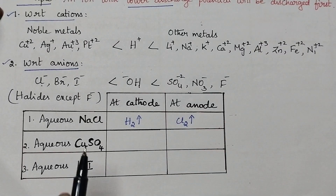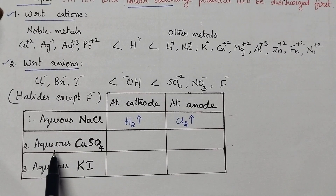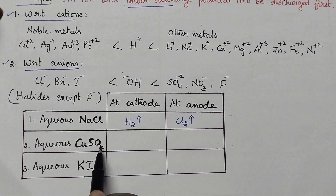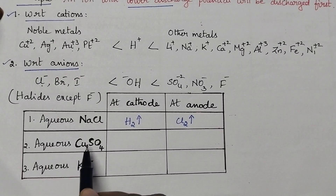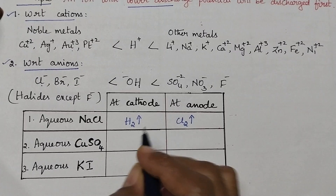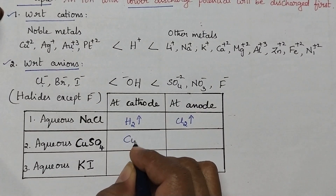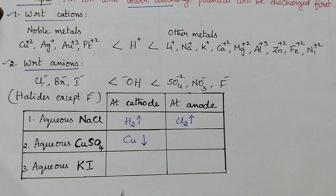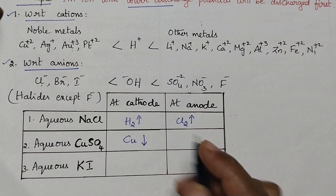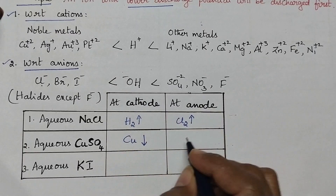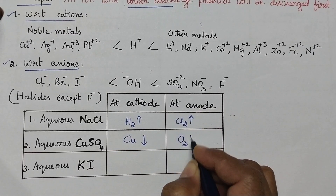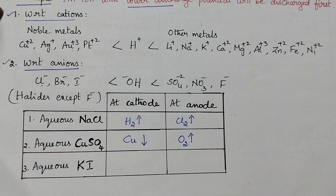Let us apply the same principle to the electrolysis of aqueous copper sulfate solution. Here copper is a noble metal, so it will be discharged first at the cathode and copper metal will be deposited. Coming to the product at the anode, OH⁻ ions will be discharged first, meaning oxygen gas will be liberated at the anode.